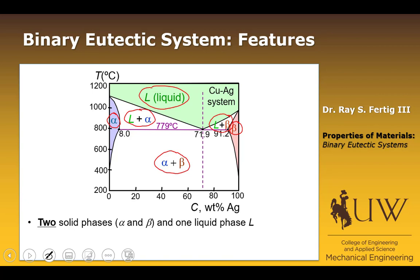These two solid phases plus the liquid phase give us six phase regions: alpha, liquid plus alpha, liquid, liquid plus beta, beta, and alpha plus beta.